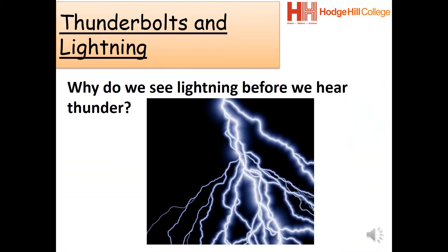Think about the question on the screen: why do we see lightning before we hear thunder? Think about what your eyes are detecting and what your ears are detecting. The answer is that your eyes are seeing light, which travels at extremely high speeds, whereas your ears are picking up sound, which travels at a slower speed — which is why you see the lightning before you hear it.